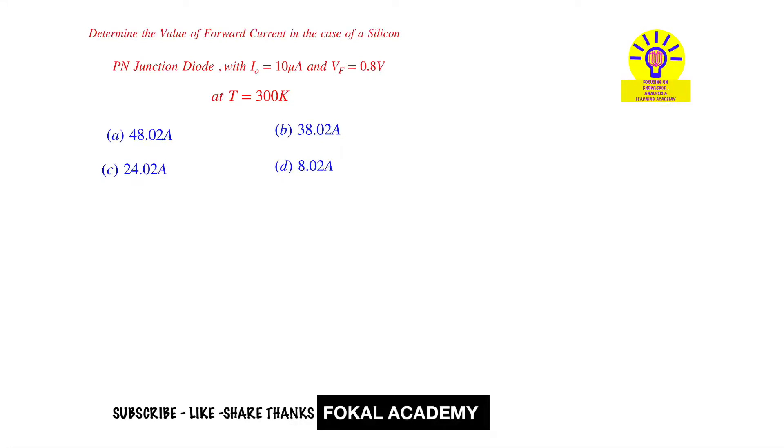See here in this problem, determine the value of forward current in the case of a silicon PN junction diode with reverse saturation current given as 10 micro amperes and forward voltage given as 0.8 volts at a temperature T equal to 300 K. Now how to find the forward current for the given problem.